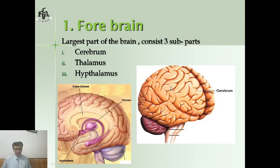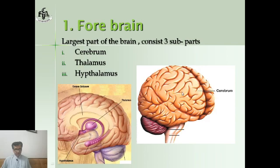The right hemisphere of the cerebrum controls the left side of the body, and the left cerebrum hemisphere controls the right side of the body. The functions controlled by the cerebrum include sight, speech, smell, taste, and hearing — these are sensory functions. Some advanced functions are also controlled by the cerebrum, such as learning, thinking, intelligence, memory, and voluntary actions. Voluntary actions are those actions which are under our will.